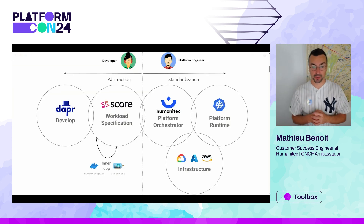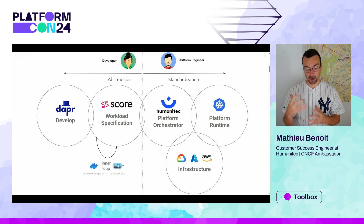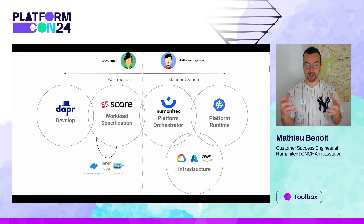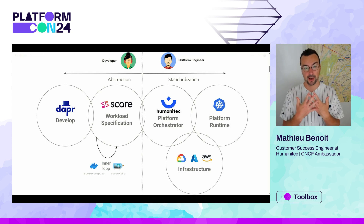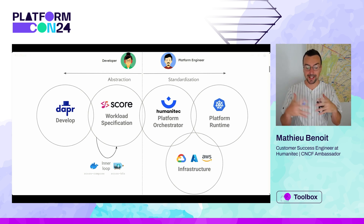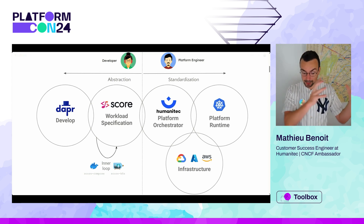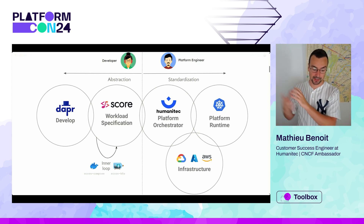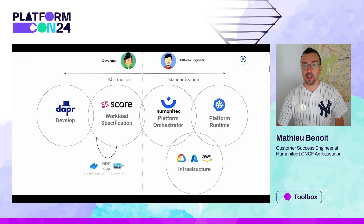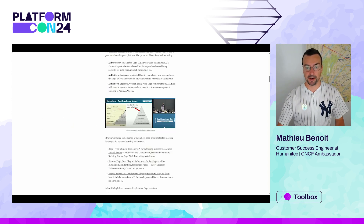The second tool we'll see today is Score. Score is a workload specification, and as a developer I'll be able to focus on the intent to deploy my containerized workload. I define how I want it deployed, and it will be platform-agnostic and environment-agnostic. Throughout this talk we'll see three main demos showing how they integrate with each other, enhance abstraction, and improve developer experience — including how a platform orchestrator like Humanitec can deploy this combined Dapr and Score bundle.